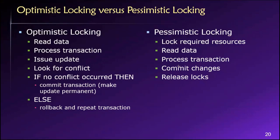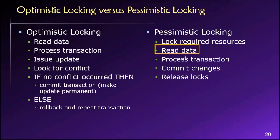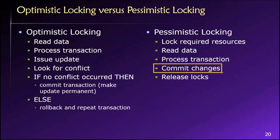Here's what happens with pessimistic locking in a series of steps. First, the database will lock whatever resources we need — we are granted exclusive access to those resources. Then we can do whatever we need to do: we read the data that are locked, we can process other steps in our transaction, maybe we do some updates, inserts, or deletes.